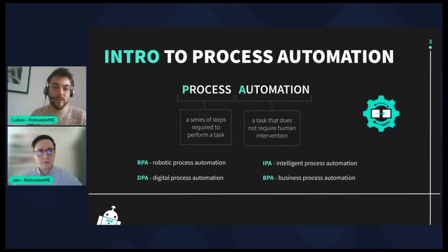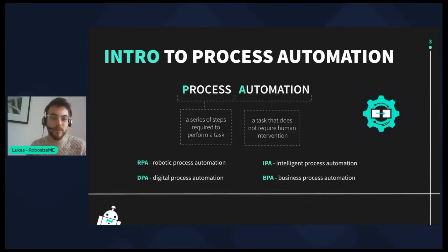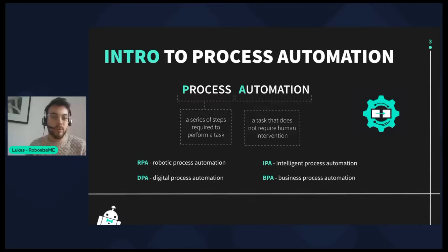At the beginning of our session, we would like to discuss the basics of process automation and have a look at what terms are used across different fields. As illustrated on the screen, process automation involves a process — a series of steps required to perform a task — and automation, which means a task that does not require human intervention.